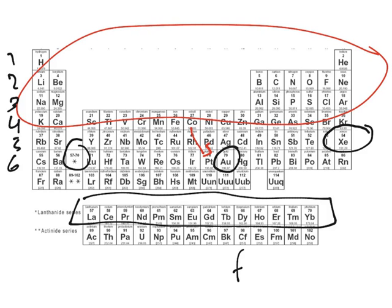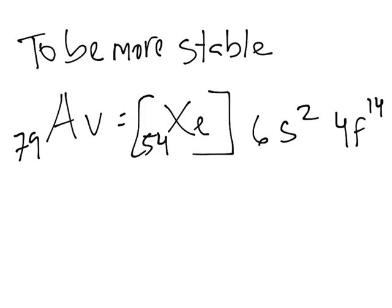And finally we get to our transition metals. So our d subshell. And it's one two three four five six, it's nine. So 5d9. And that's how you would just write it usually.